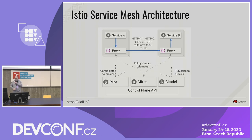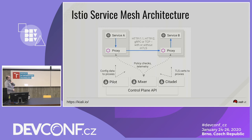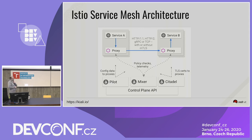Istio is one of the service mesh implementations. Its architecture is based on the Envoy proxy sidecar, which is integrated into the pod and provides information about the inbound and outbound traffic of your service. It has several components such as Pilot for service discovery, Mixer for policy checks and telemetry, and Citadel for authentication and security.